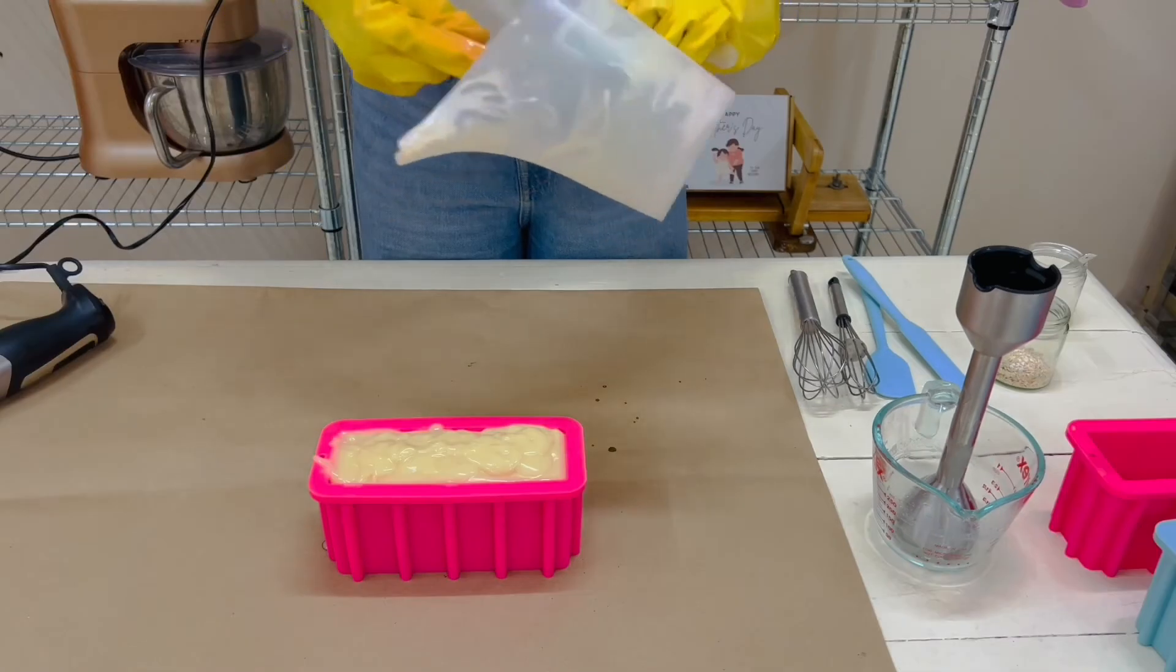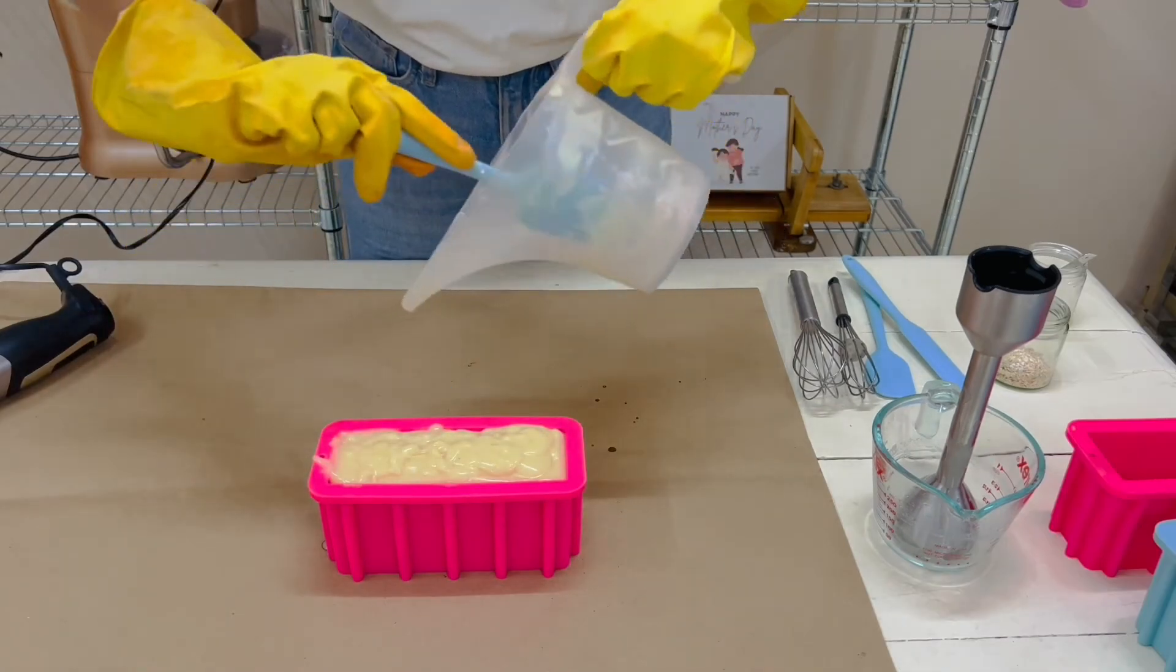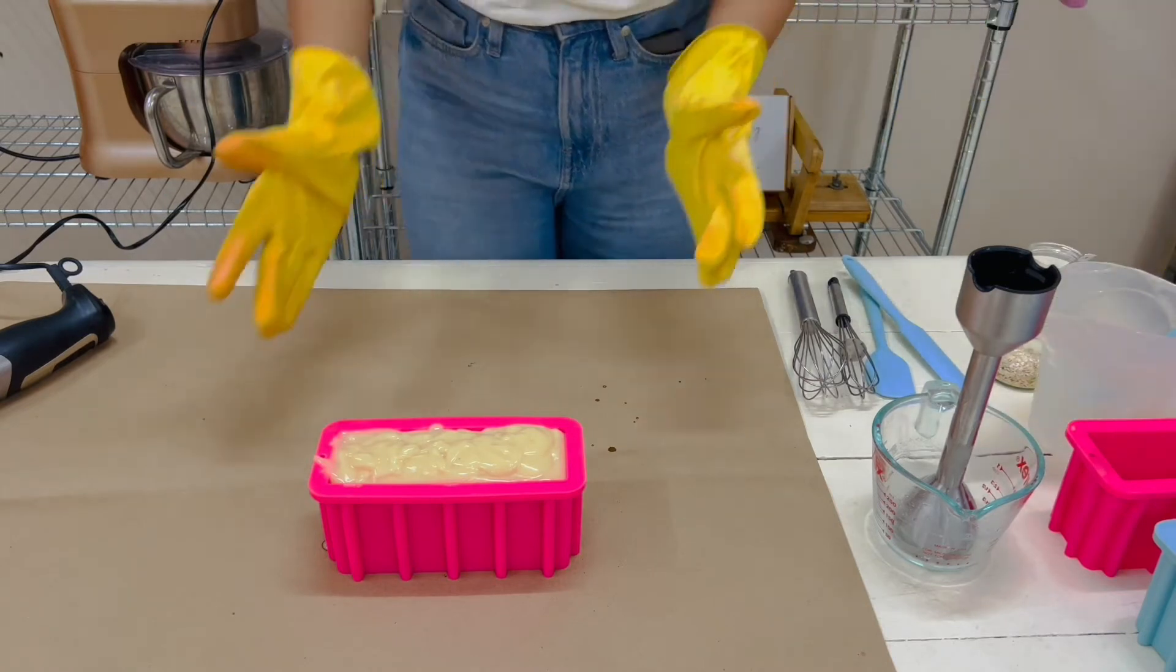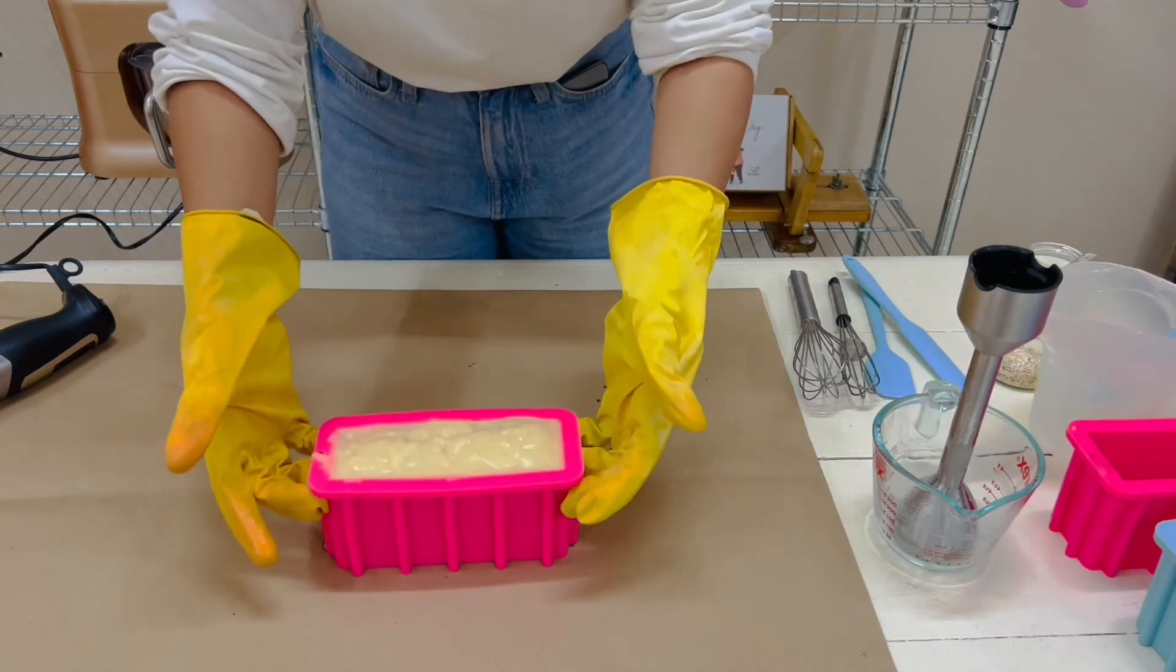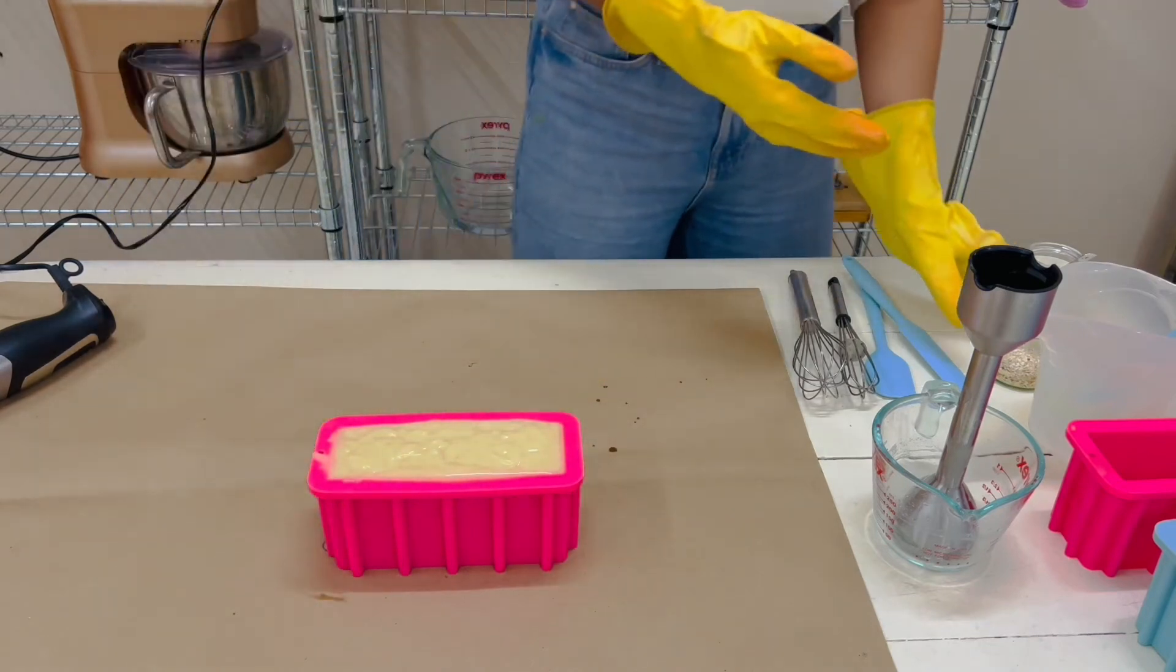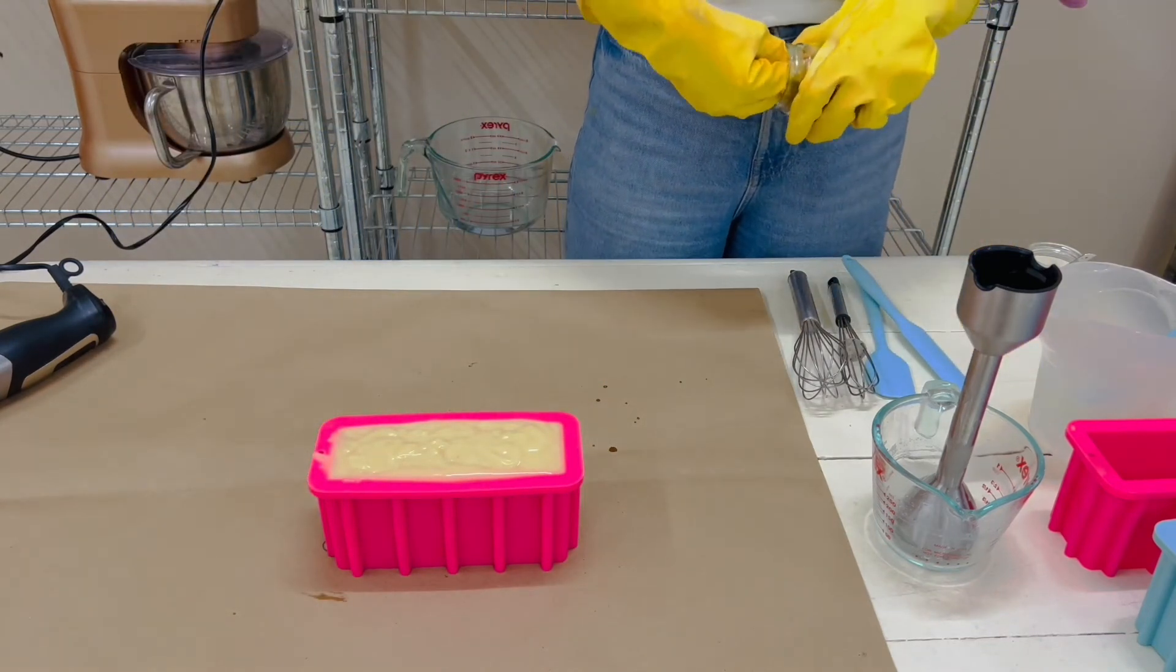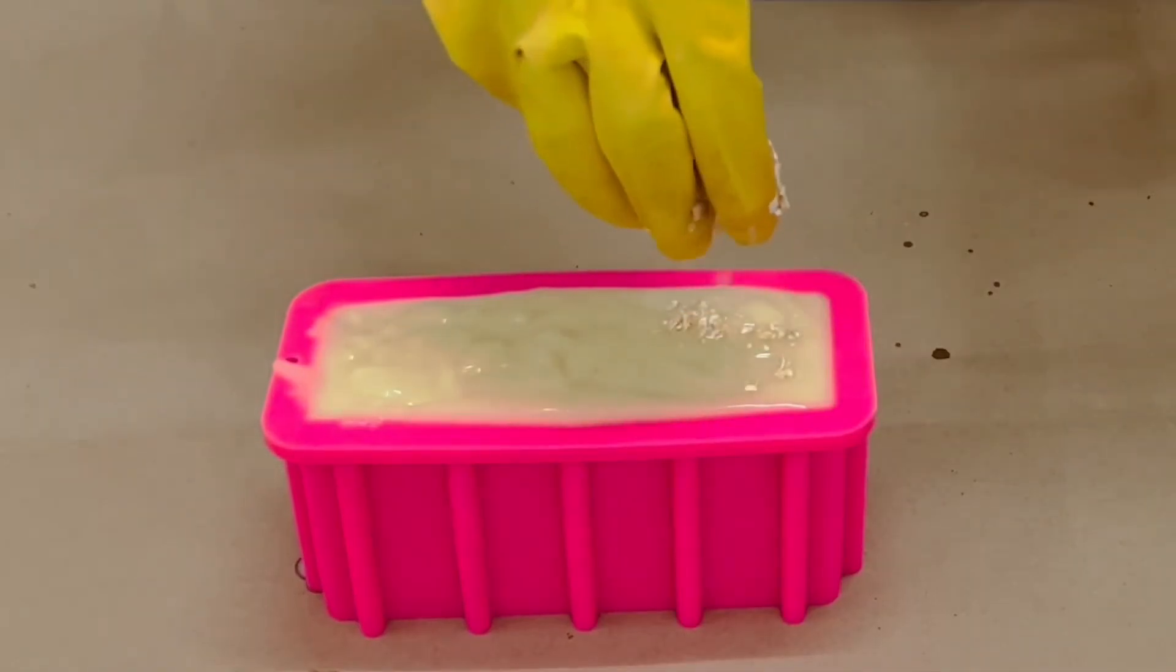It has come out really buttery. Look at the texture, it is so beautiful. Now I'm going to do the essential step: tap, tap, tap. This really helps the soap to get rid of any air pockets in the soap, and the cut is really smooth afterwards. Now I'm just going to put oats on the top of the soap.